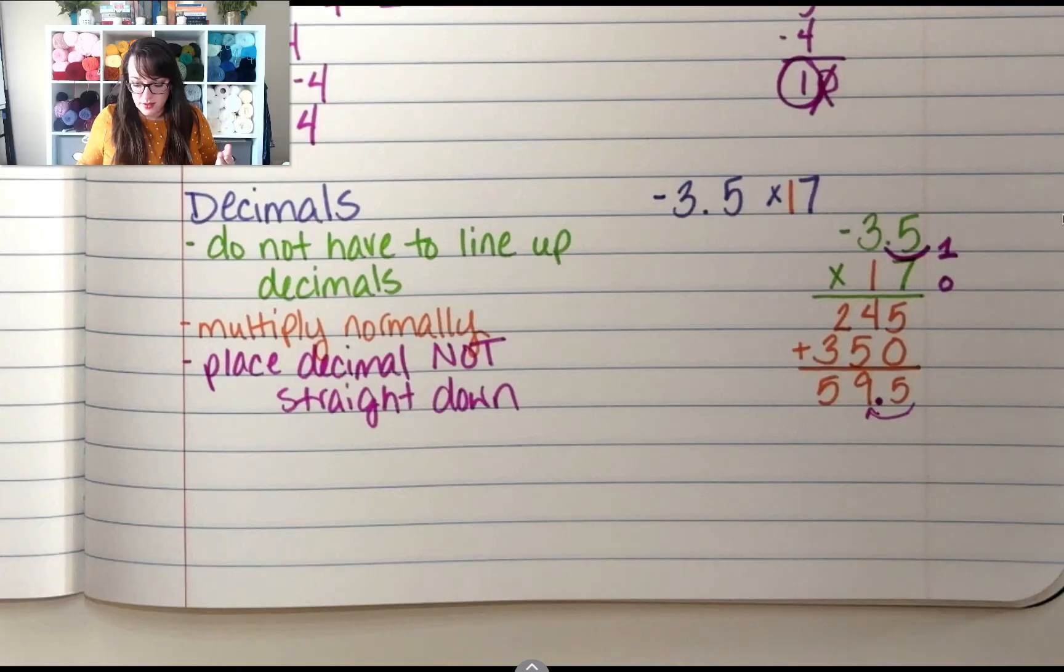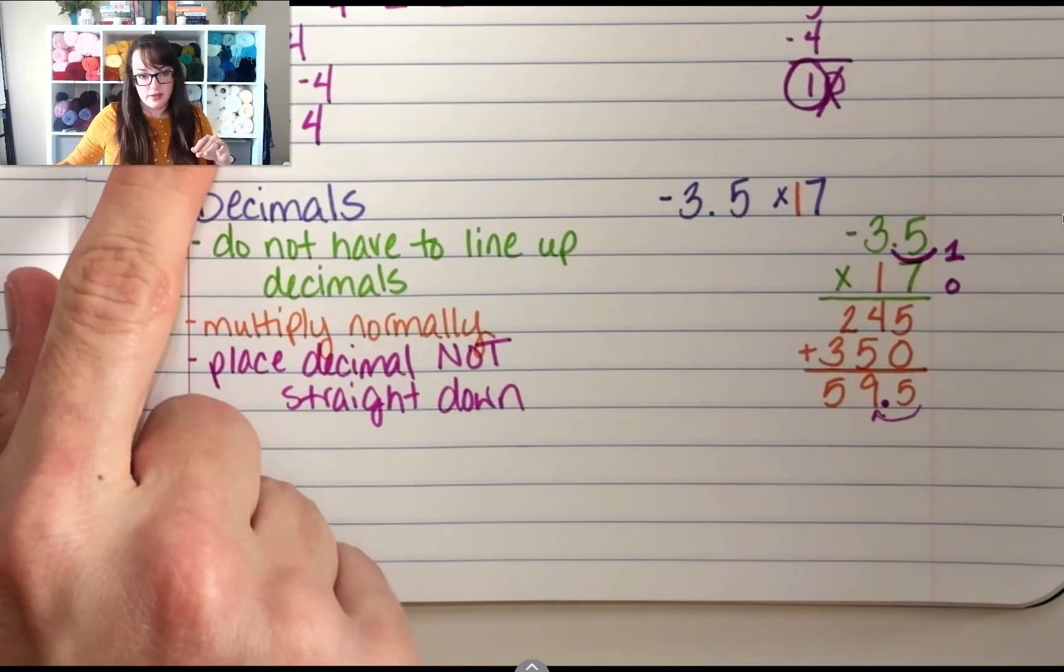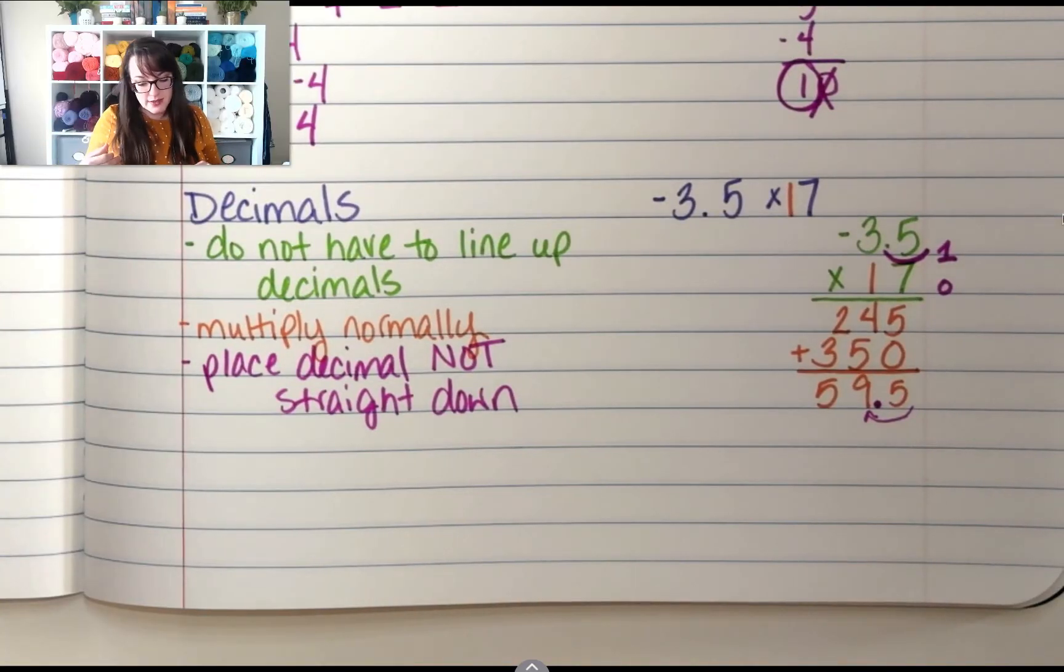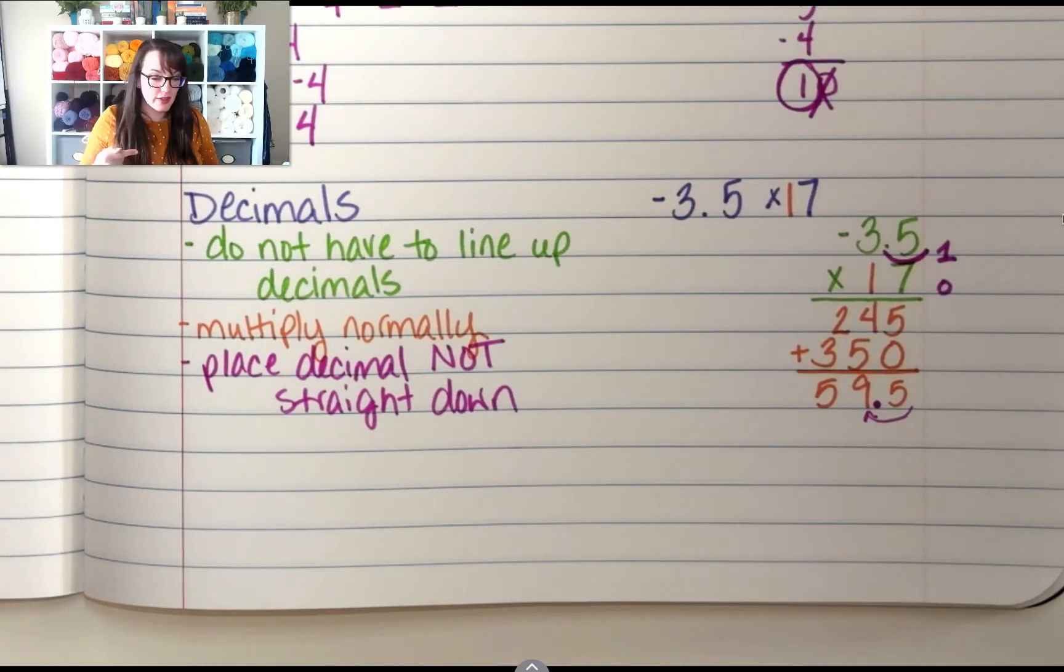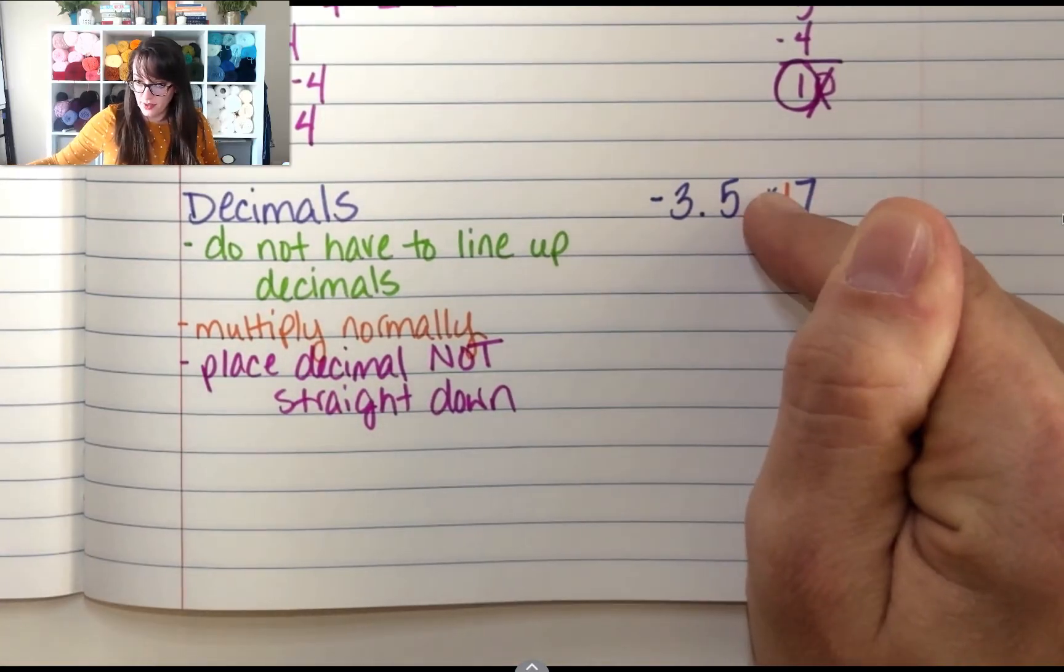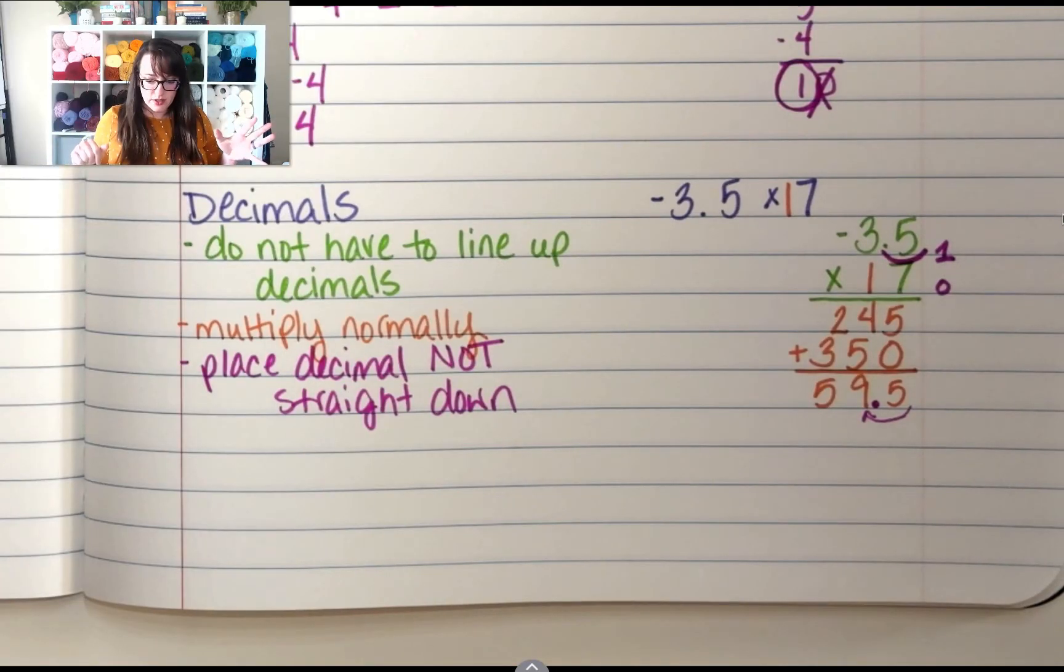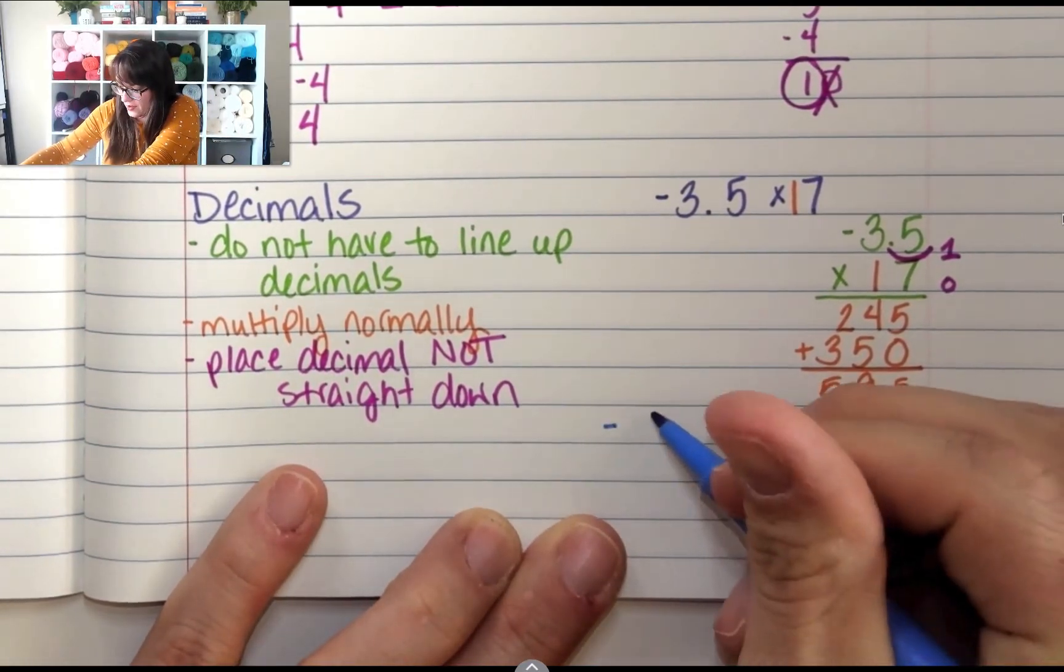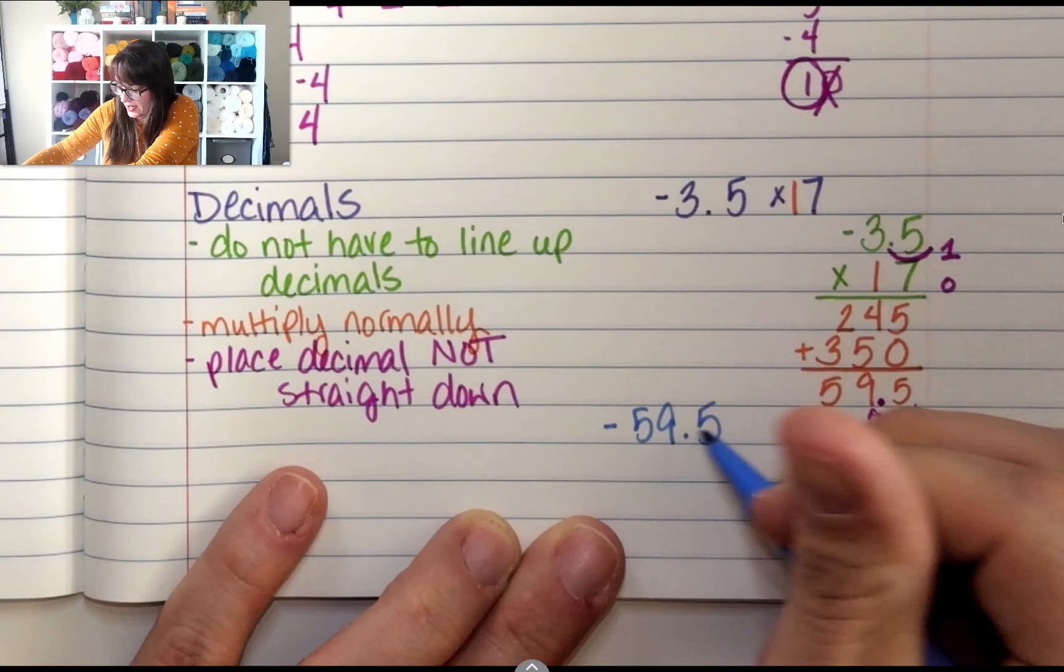Now, the last thing. Same rules as up here. A positive times a positive is a positive. A positive times a negative is a negative. So if this is a negative times a positive, is my answer positive, or is my answer negative? Your answer is going to be negative. So this is a negative 59.5.